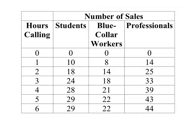The first thing we do is remember that all decisions are made at the margin, so we want to compute the marginal benefit from each hour spent soliciting clients from each category of customers. We compute the marginal benefit by looking at the change in sales as we spend an additional hour. The marginal benefit from spending the first hour soliciting students would be ten — that's the change in total — and for the second hour the marginal benefit is eight.